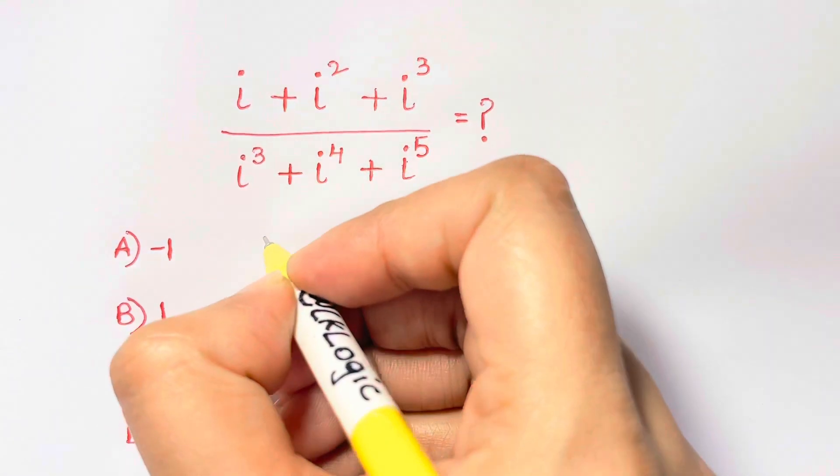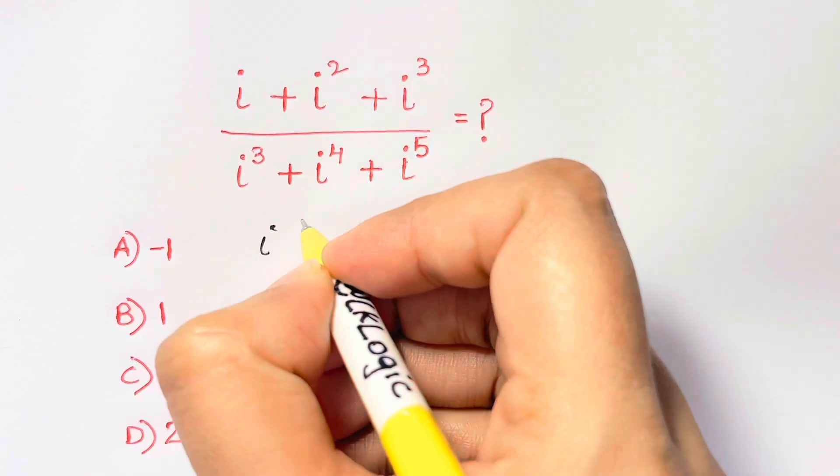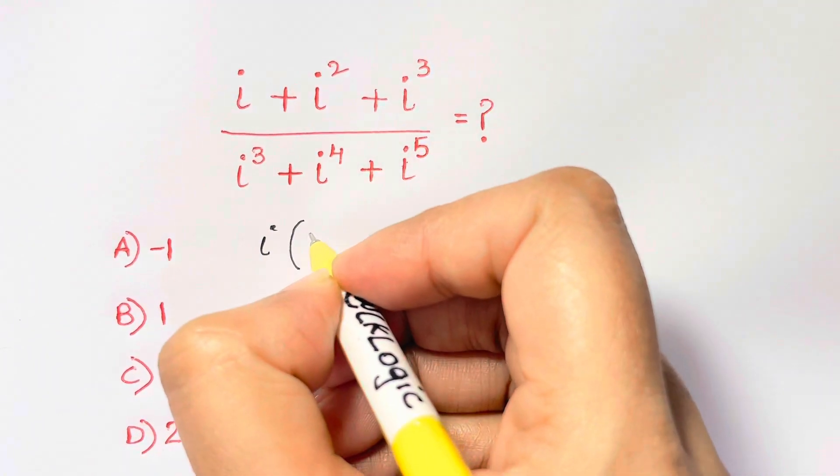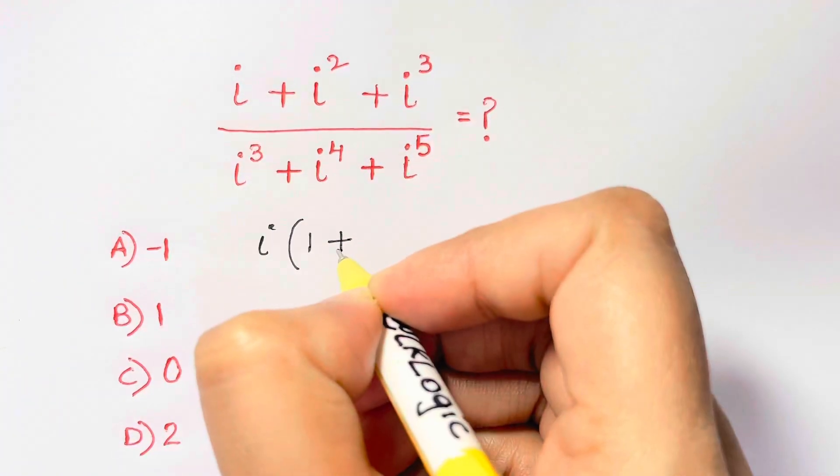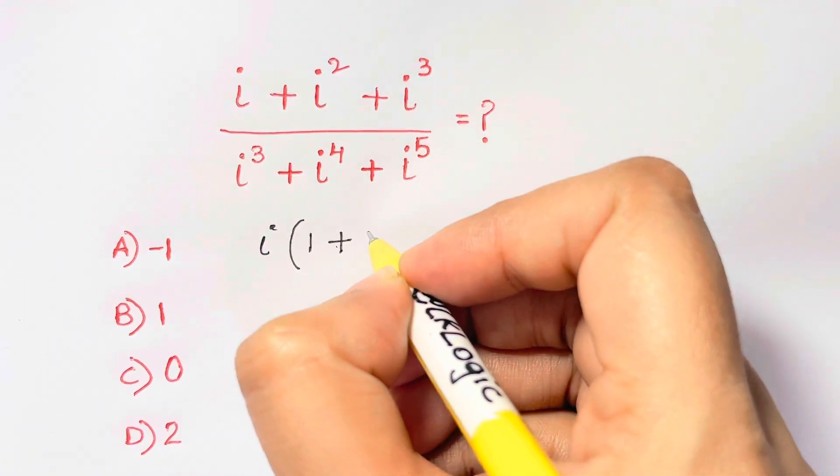Let's take out i common from the numerator, the top part. So what are we left with? 1 plus,